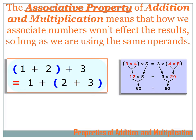Consider the expression 3 times 4 times 5. With brackets around the 3 times 4, we do that first: 3 times 4 is 12, then 12 times 5 equals 60. Now let's move the brackets to the right side: 3 times parentheses 4 times 5. We do what's in the parentheses first, so 4 times 5 equals 20, then 3 times 20 equals 60. 60 equals 60 — the associative property works.